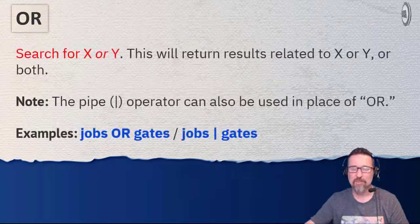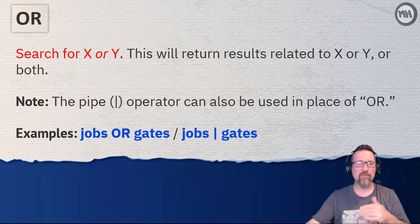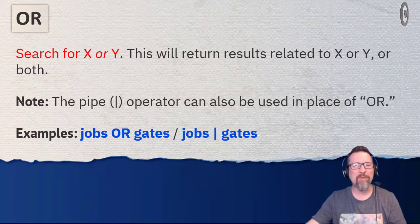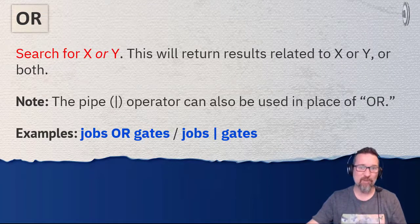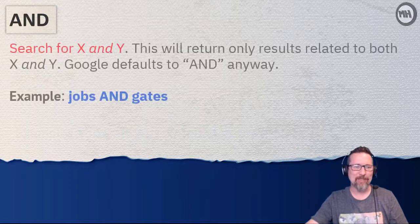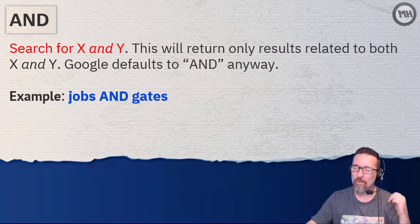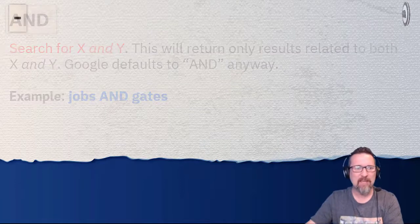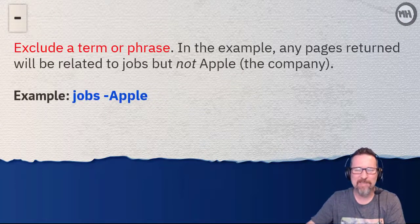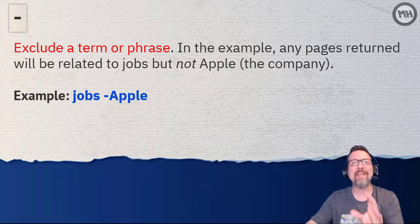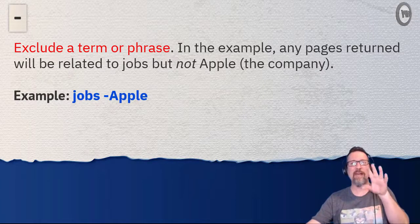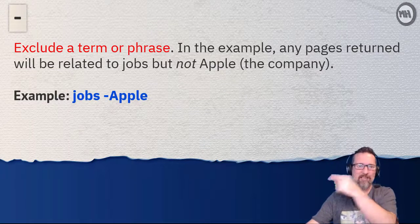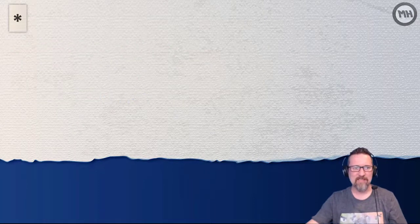Then there's the OR factor — search for X or Y using the word 'or'. For example, search for 'Jobs or Gates'. You can also use a pipe symbol, which is a straight vertical line. AND is another operator — search for X and Y together. Then we have the minus key, which excludes something. For example, 'Tesla minus cars' would exclude car-related results.